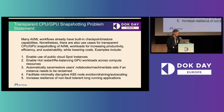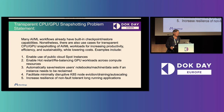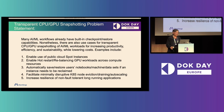What we're trying to do is enable transparent CPU and GPU snapshotting of pods running AI/ML workflows. A lot of people ask us: don't these AI/ML workflows already have built-in checkpoint restore capabilities? They do — TensorFlow has it, PyTorch has it, et cetera. But nonetheless, we see use cases for doing this transparently by Kubernetes operators to increase productivity, efficiency, and sustainability while lowering costs.